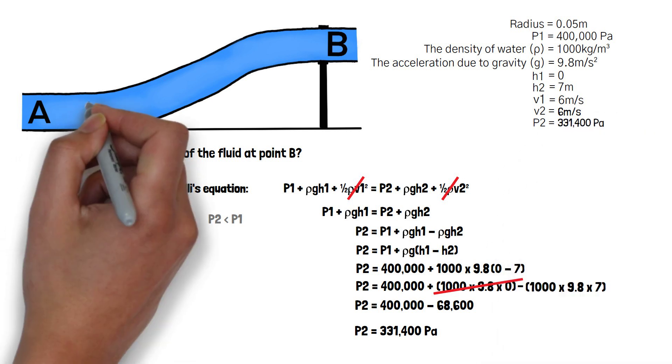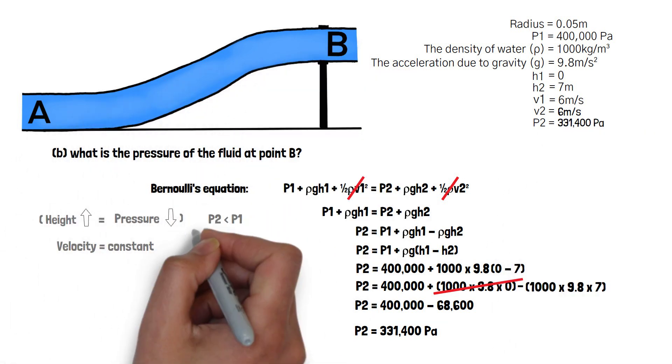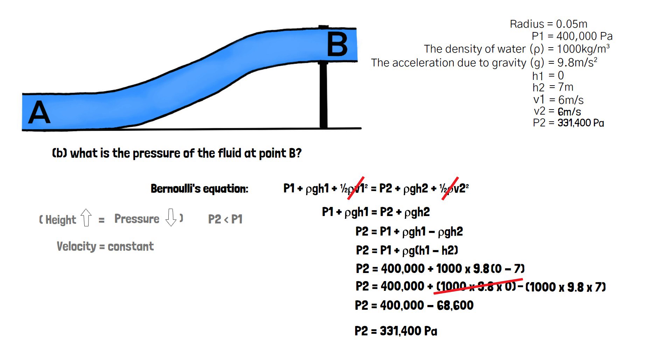As there has been an increase in height of the pipe and our value for P2 is lower than our value for P1, we know that our answer is consistent with the expected answer.